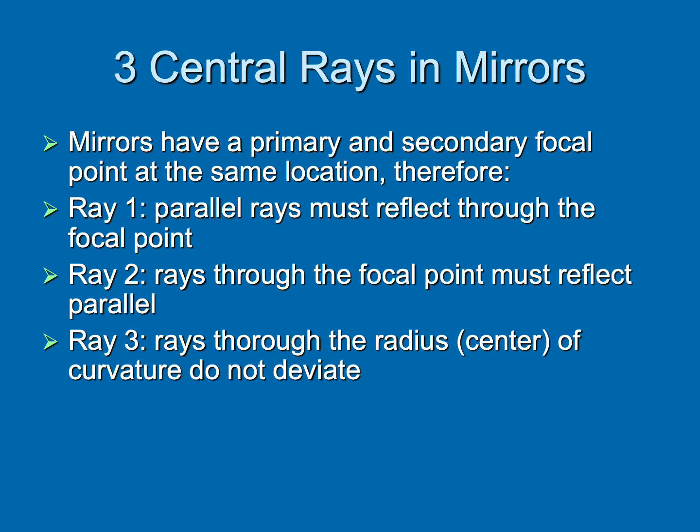If we're going to draw central rays for mirrors, the first ray needs to start out parallel and then it must reflect through that focal point. Second ray is going to start out through the focal point and then it reflects back parallel. The third ray goes to the center of curvature. It does not reflect anywhere. It just bounces back on itself. So it's through the radius of curvature or for mirrors, we call that center of curvature.